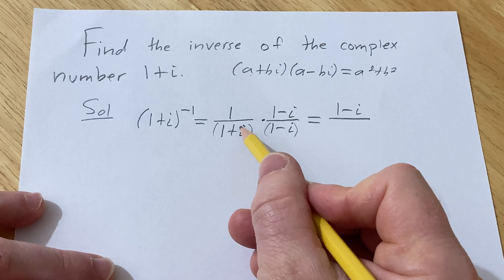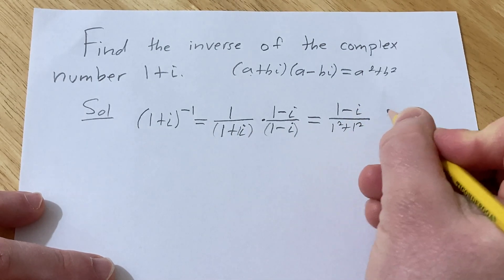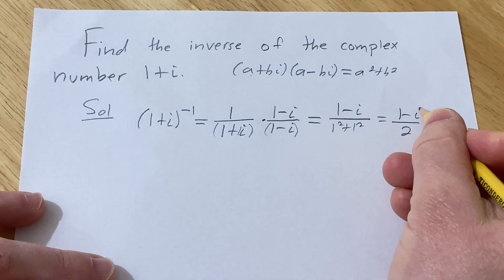So here a is 1 and b is 1. There's an invisible 1 here. So this will be 1 squared plus 1 squared. So this is 1 minus i over 2.